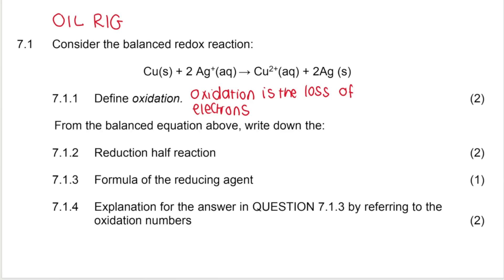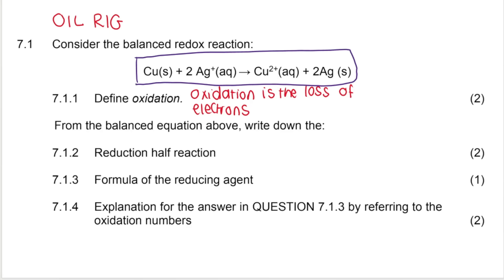Then they say from the balanced equation above, write down the reduction half reaction, the formula of the reducing agent, and then they want you to explain your previous answer by referring to oxidation numbers. When given a balanced equation such as this, there are a few ways to determine which substance has been oxidized and which has been reduced. The easiest in this case is using oxidation numbers.